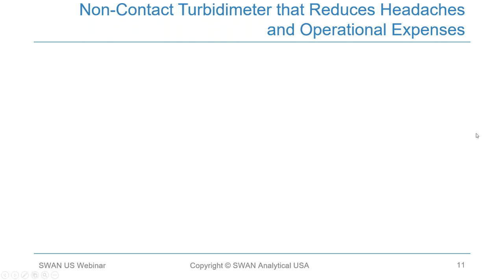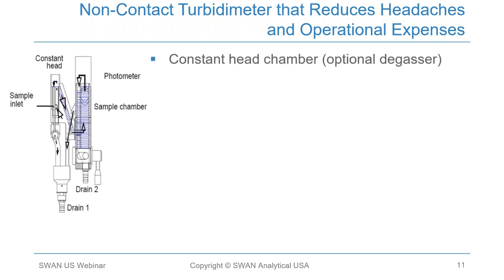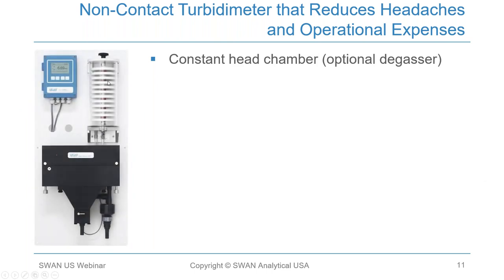Swan's instrument features a constant head chamber. As water flows in, there is a constant head chamber with an overflow tube that allows the majority of air bubbles to be off-gassed before the water enters the measurement unit. In situations where someone is using a pump generating a large amount of air bubbles, Swan also offers an optional degasser, though it's typically not required for most installations. Swan uses a specially designed chamber that avoids measurement errors due to light reflection.